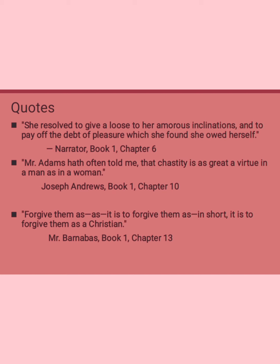The quote 'Forgive them as it is to forgive them as a Christian.' Mr. Barnabas is a minister who comes to see to the parishioner's needs after the doctor says the person is near death. Barnabas insists that Joseph forgive his attackers. Joseph explains he would have them arrested and brought to justice. Mr. Barnabas believes it is lawful but still insists Joseph needs to forgive the thieves, whatever they have done. When Joseph asks what it means to forgive them, Barnabas is clueless and can only repeat the phrases.